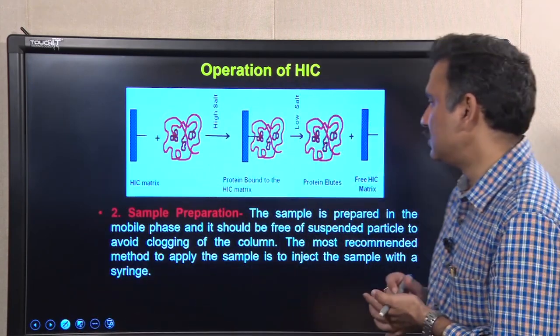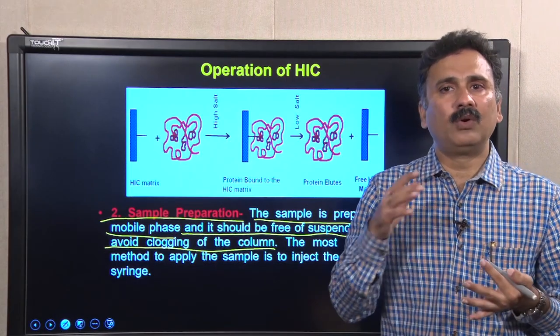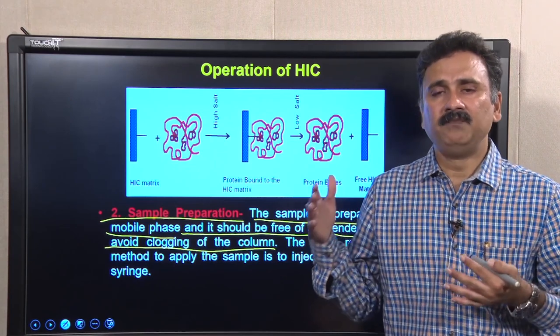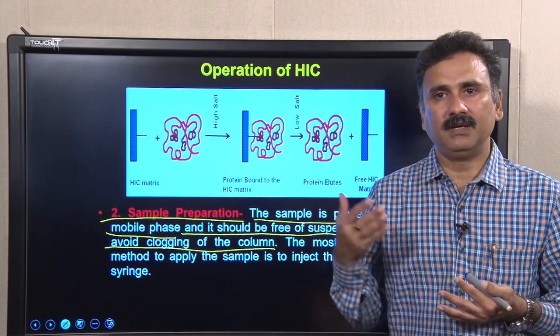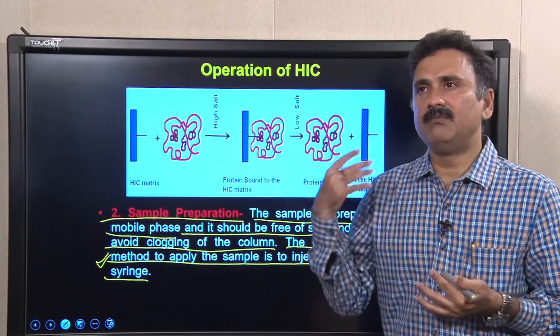Once equilibration is over, proceed to sample preparation. The sample must be prepared in the mobile phase — in this case the buffer containing 0.5 to 1.5 molar ammonium sulphate. You must avoid clogging the column, meaning your sample should be free of suspended particles, dust particles, and precipitated proteins, otherwise clogging will affect the column flow rate. The most recommended method to apply the sample is to inject it with a syringe, applicable when using a protein purification system with loops; otherwise you can manually load the sample.